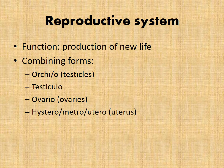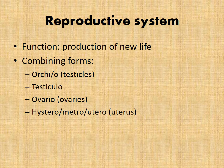Our reproductive system is for the production of new life. Combining forms include orchi for testicle — like orchectomy, which is the surgical removal of the testicles, a fancy term for a neuter — testicular for testicles again, ovario for ovaries, and the uterus is special enough to have three combining forms: hystero, metro, and utero all refer to the uterus.